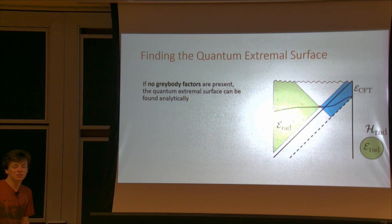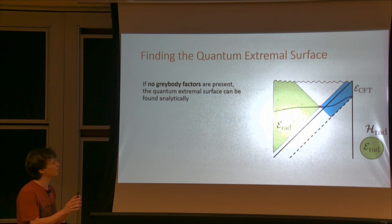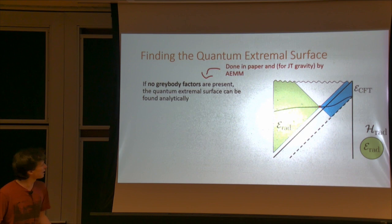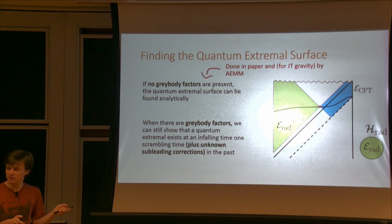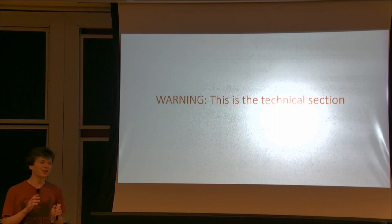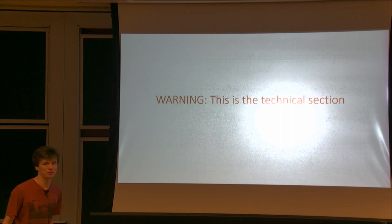I'd like to talk about how you actually derive this claim. If you don't have grey body factors — say you're in 1+1 dimensions, or you just extract the Hawking radiation from pretty close to the horizon before it gets reflected back in — you can just calculate the quantum extremal surface analytically. This was done in my paper and in JT gravity by Ahmed and co. I'm going to briefly sketch a much more general argument that even when there are grey body factors, there will still be this quantum extremal surface one scrambling time in the past, with just some unknown subleading corrections of order beta — much smaller than the scrambling time.